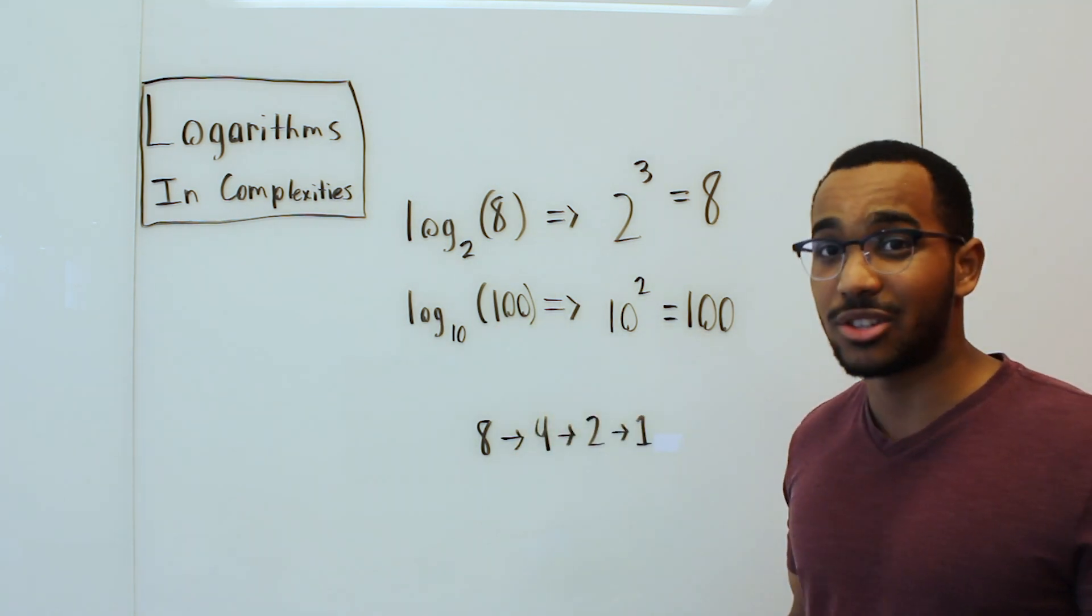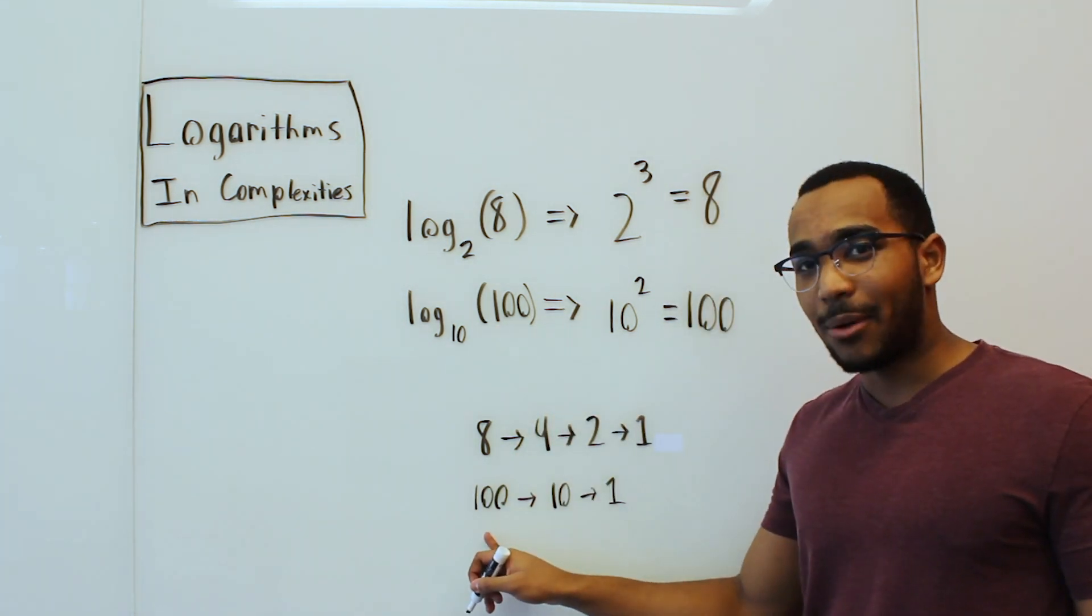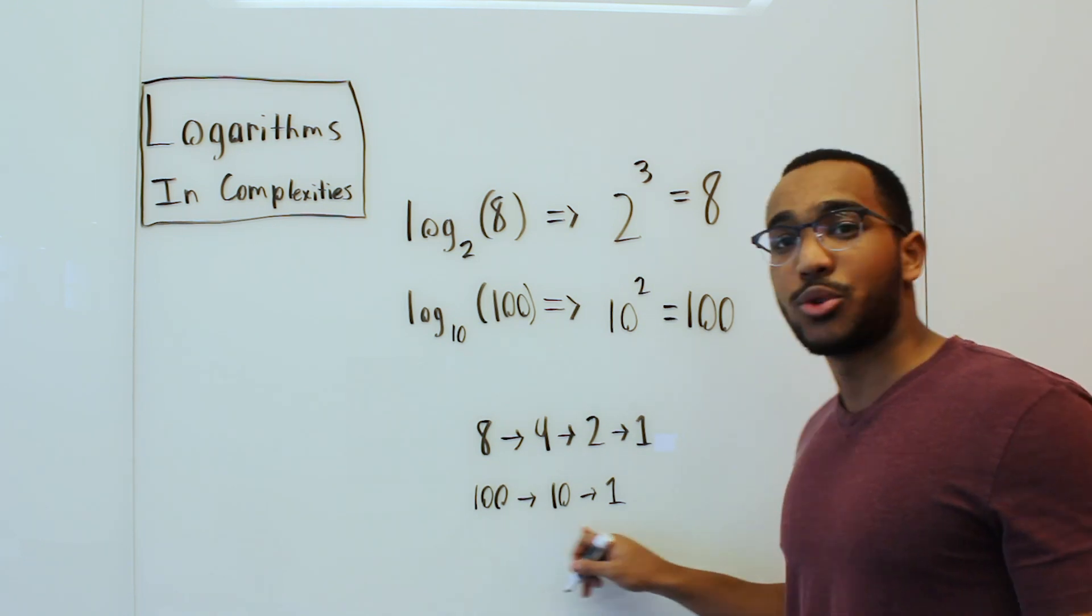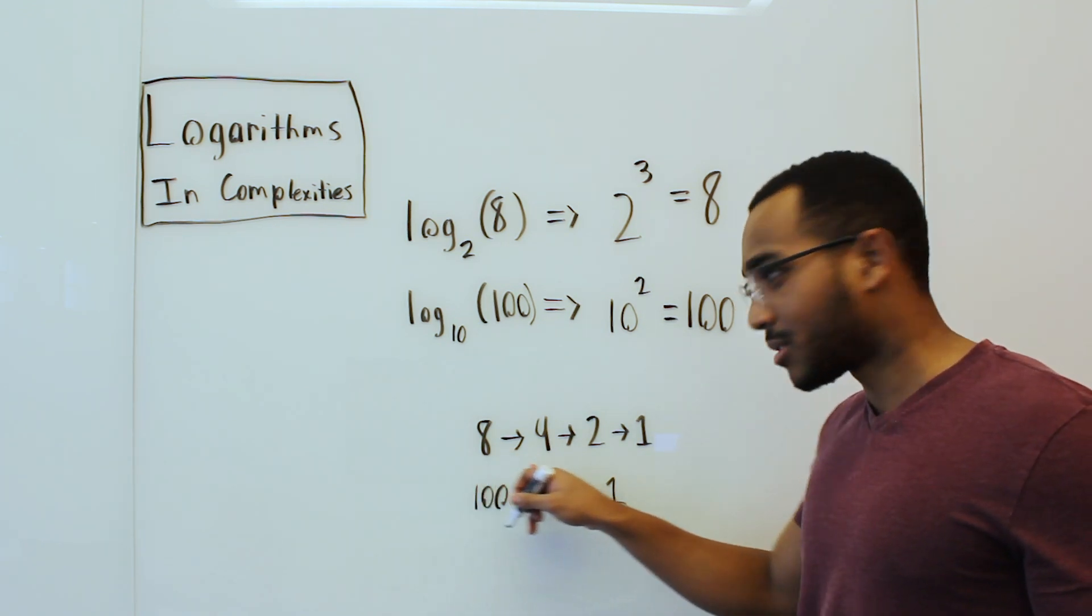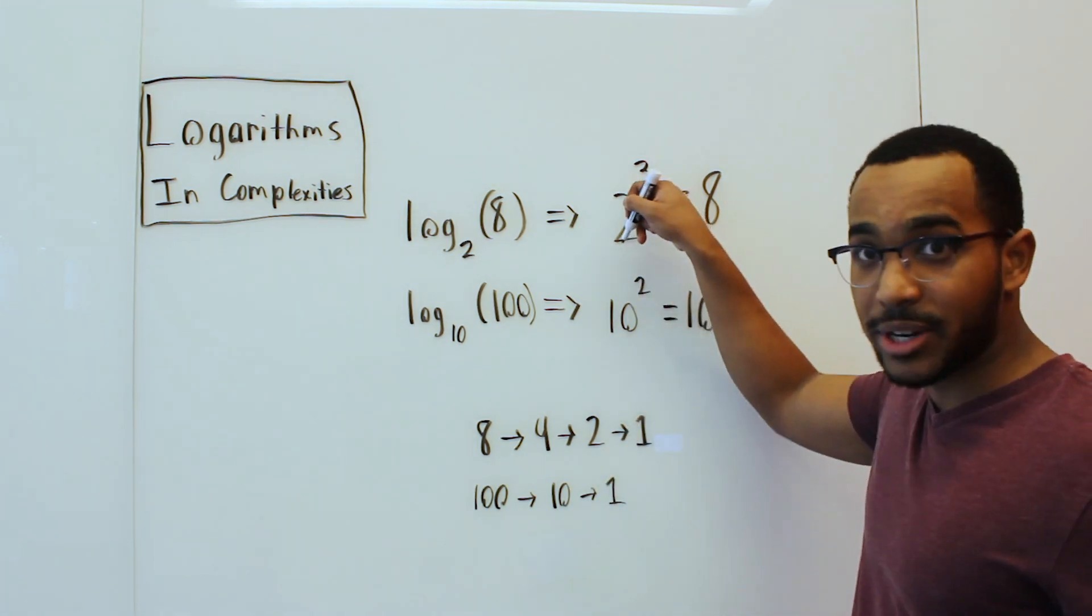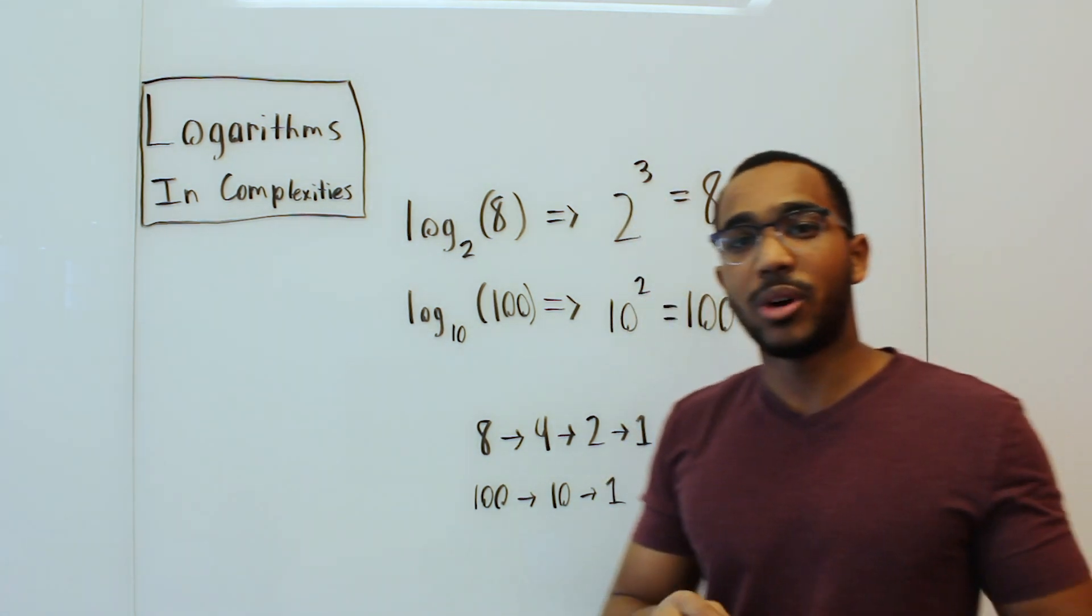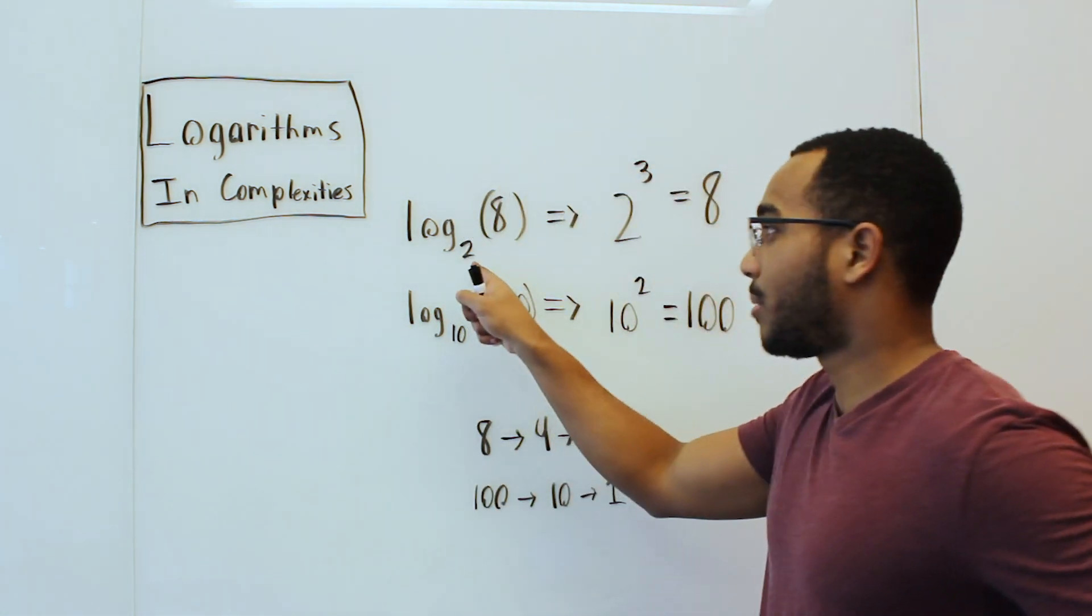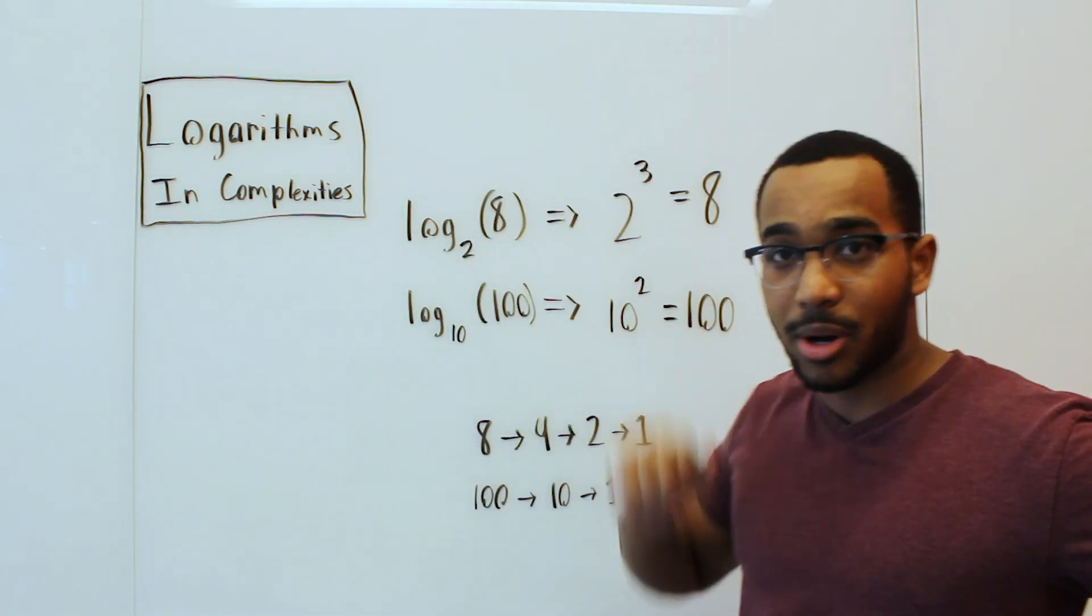For the log base of 10, this is what it would look like. Do you see how we just 10th 2 times? We just cut 10ths twice. We cut halves 3 times. Hence the 3. Hence the 2. This is what a logarithm is all about. It's all about what do we want to power the base by to get the number in the parentheses.